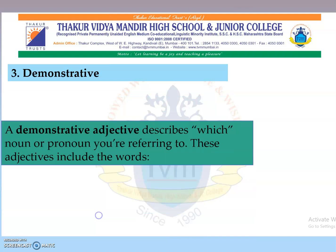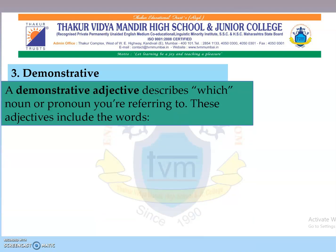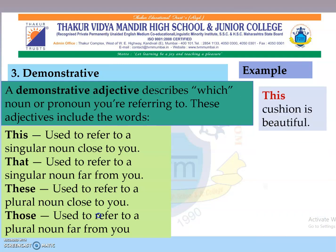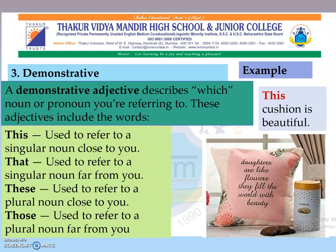The third type is demonstrative. A demonstrative adjective describes which noun or pronoun you are referring to. These adjectives include: 'this' — used to refer to a singular noun close to you, for example 'this cushion is beautiful'; 'that' — used to refer to a singular noun far from you; 'these' — used to refer to a plural noun close to you; and 'those' — used to refer to a plural noun far from you.